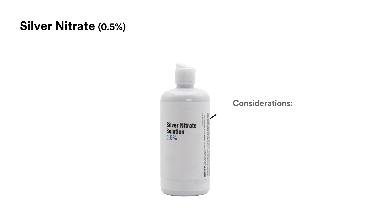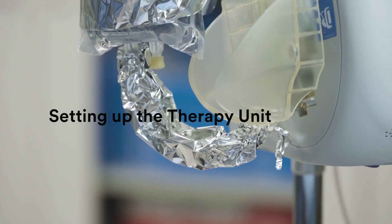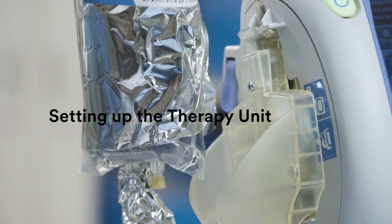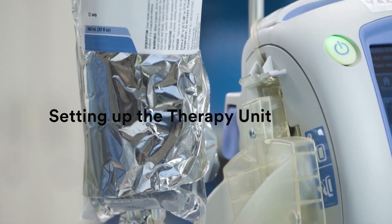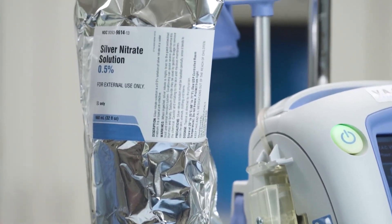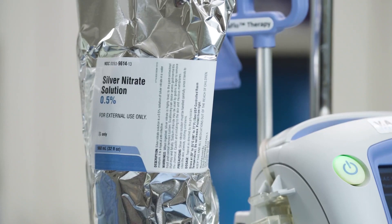Silver nitrate is another compatible solution. It comes under various trade names at 0.5% concentration. Be aware that silver nitrate is light sensitive, so the 3M VAC VeriLink cassette tubing must be protected from light during use of silver nitrate.